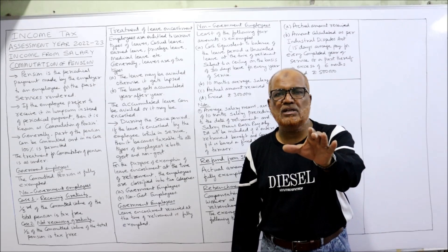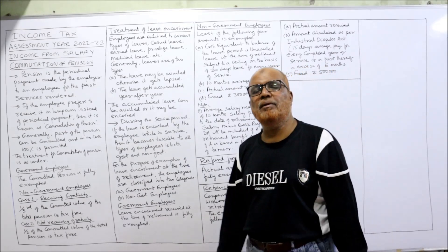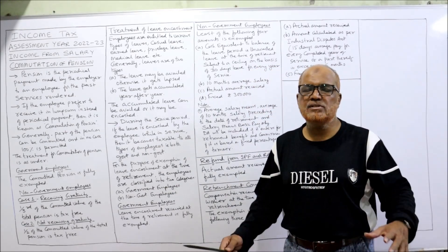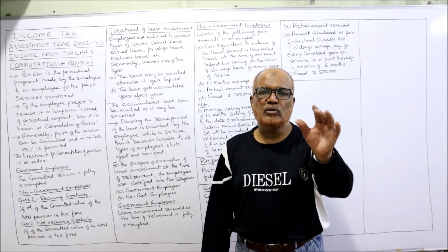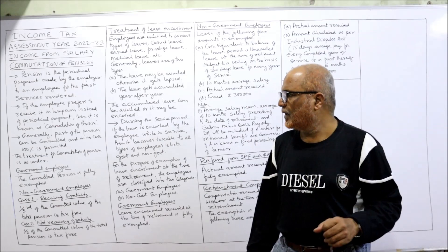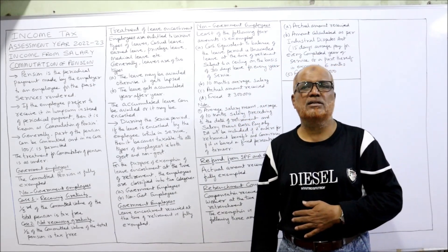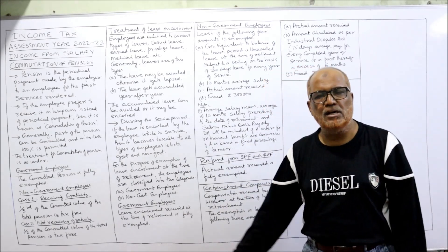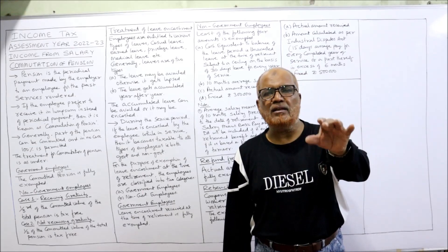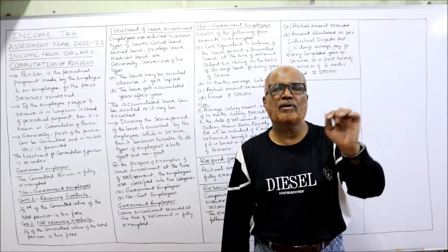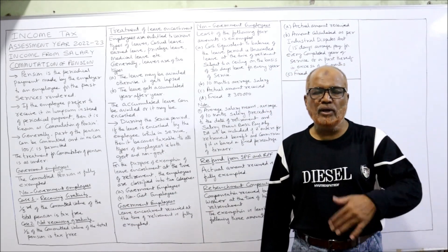Generally only part of the pension will be commuted and the rest remains periodical. No company will give 100% commuted pension — a part is commuted and part will be periodical. For government employees, the commuted pension received at the time of retirement is fully exempted from tax. This is a very easy rule: if the employee is a government employee, commuted pension received is fully tax-free.